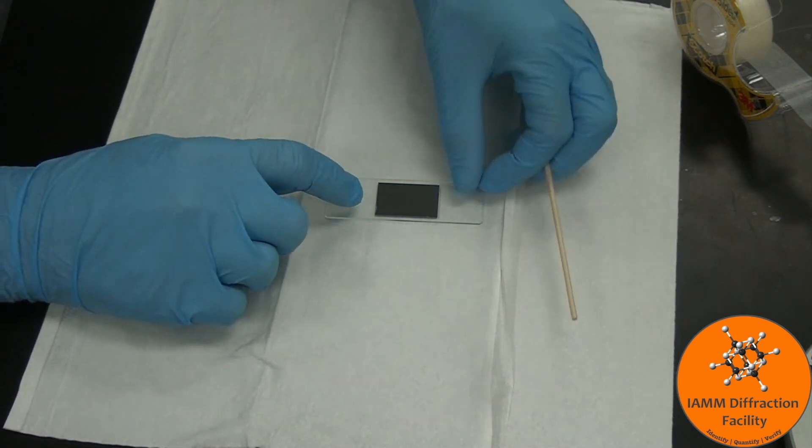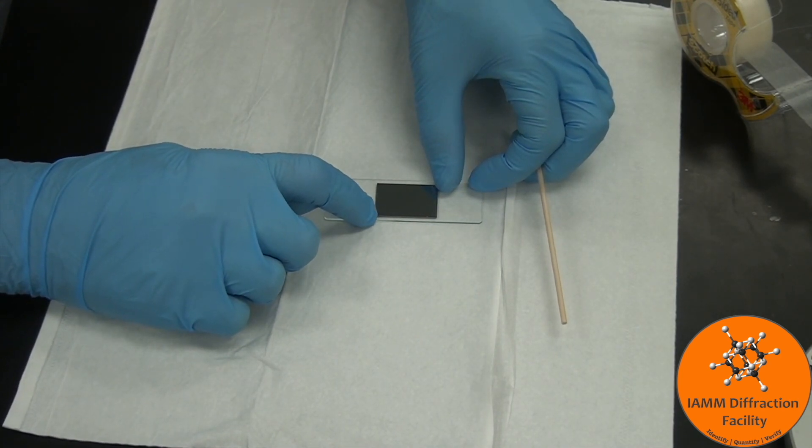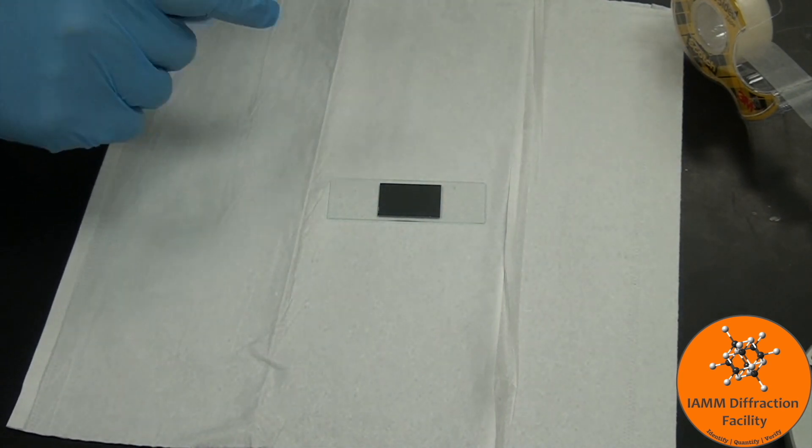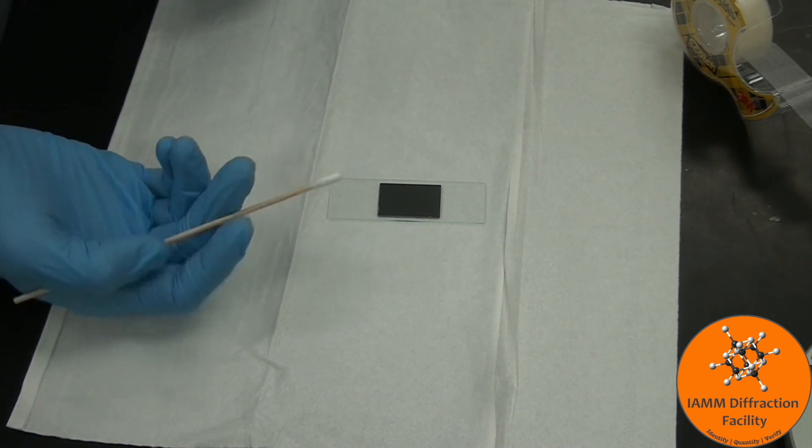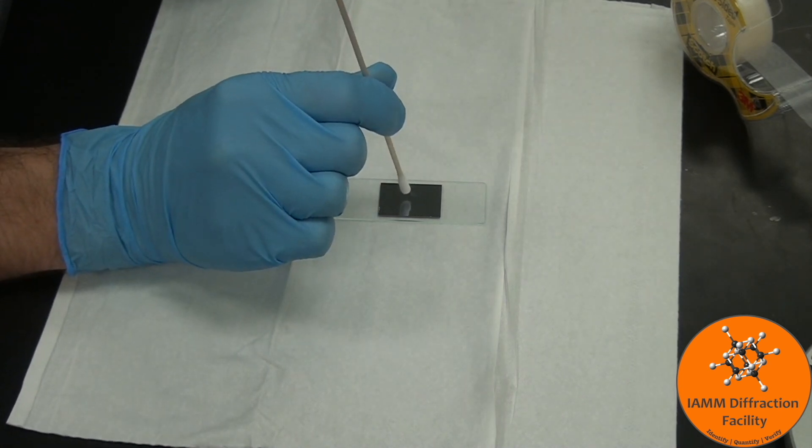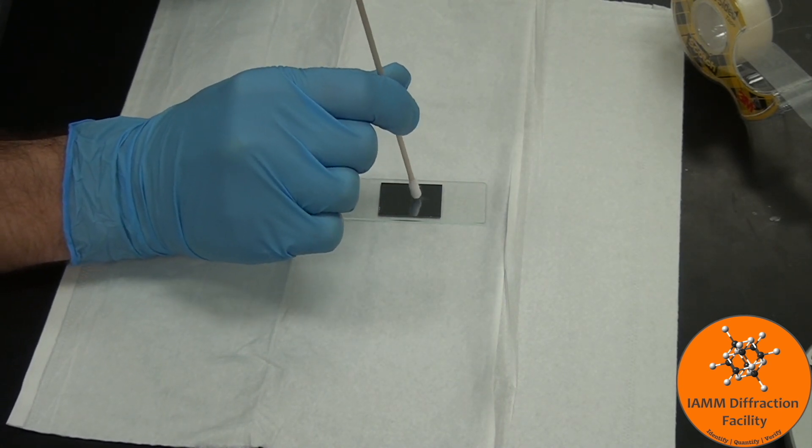I can then either push down on the sides, or I can push down with my finger on the center of the sample if that doesn't affect the sample at all. I also have q-tips with which I can push down on it gently to get it to stick to the tape.